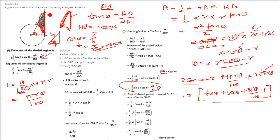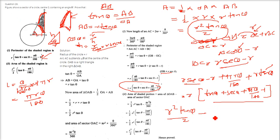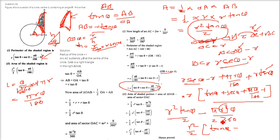For the area of the shaded region, we subtract the area of the sector from the area of triangle OAB. Area of triangle = R² tan θ / 2. Sector area = (θ/360) × πR² = πR²θ/360. Taking R²/2 as a common factor: area = (R²/2)(tan θ − πθ/180). This is the second result we needed to prove.